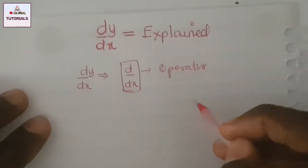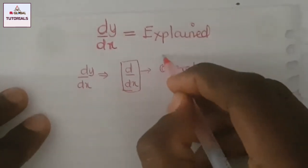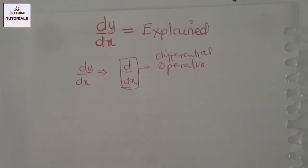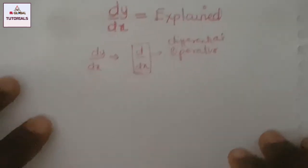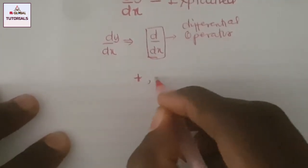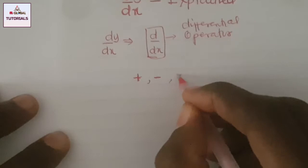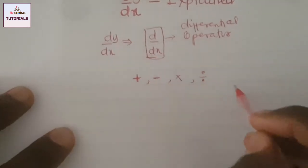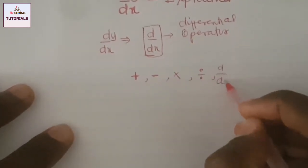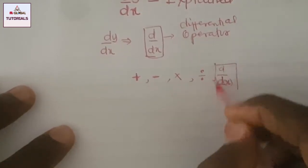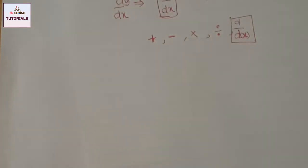The name of this operator is called the differential operator. A differential operator is used to differentiate a function. It's similar to arithmetic operators — like addition, subtraction, multiplication, and division. So d/dx, or d over any variable, is an operator.